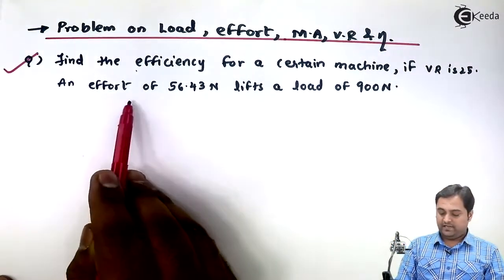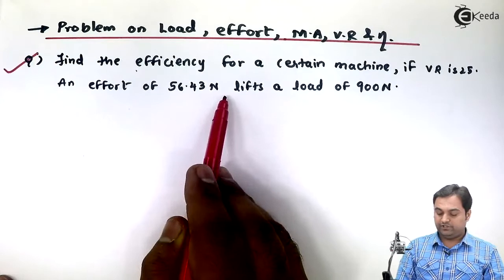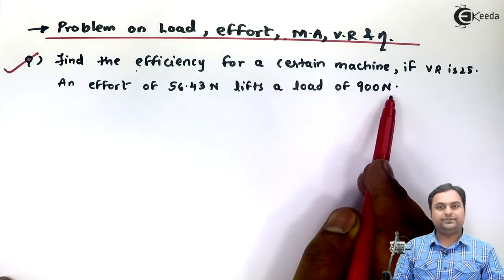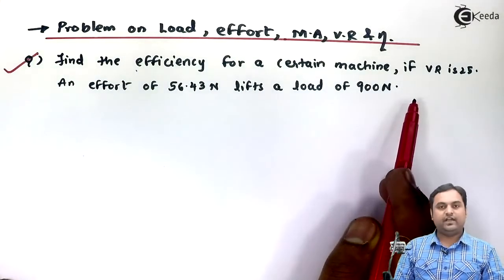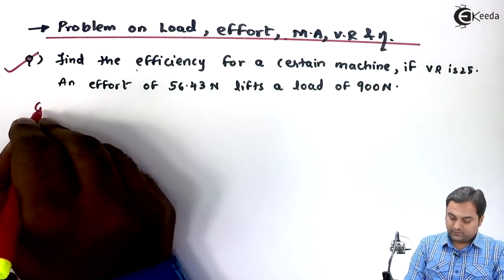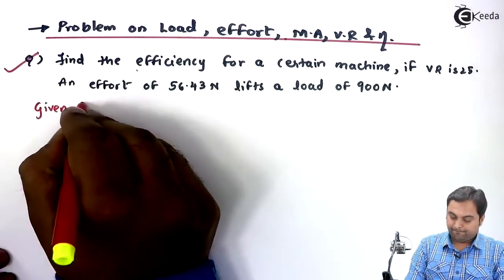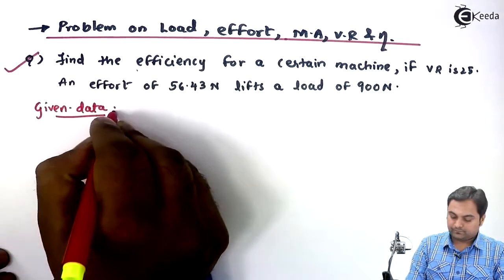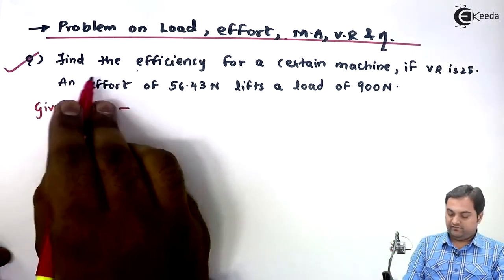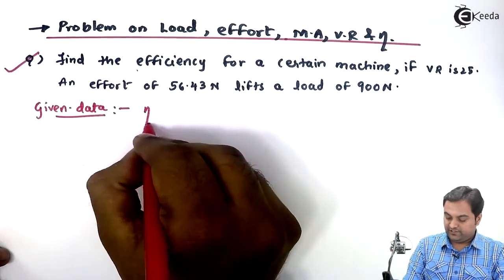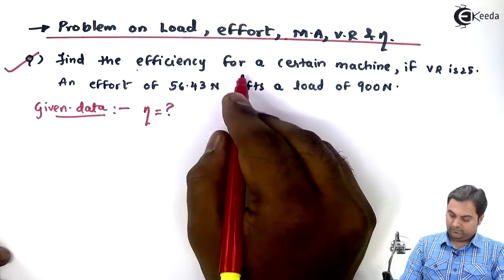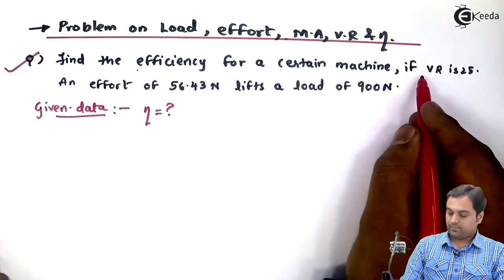25. An effort of 56.43 Newton lifts a load of 900 Newton. This is the question we have. I'll start with the data. It is given: find the efficiency. We have to find efficiency for a certain machine if VR